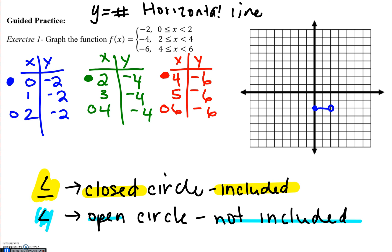The next piece is y equals negative 4 from 2 to 4. So I'm going to go to 2, negative 4 and put a closed circle, then over to (4, -4) and put an open circle, and connect.